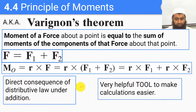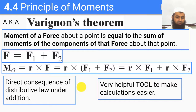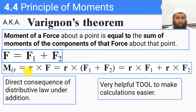In that sense, the principle of moments is a direct application of one of the basic properties of cross products, which is that cross products are distributive under addition, as we saw in our previous lecture. So why does something so simple and trivial have a name to it? It is called Varignon's theorem because it is a very, very useful tool. Sometimes it is much easier to compute the moment directly; at other times it is much easier to break the force into components first.